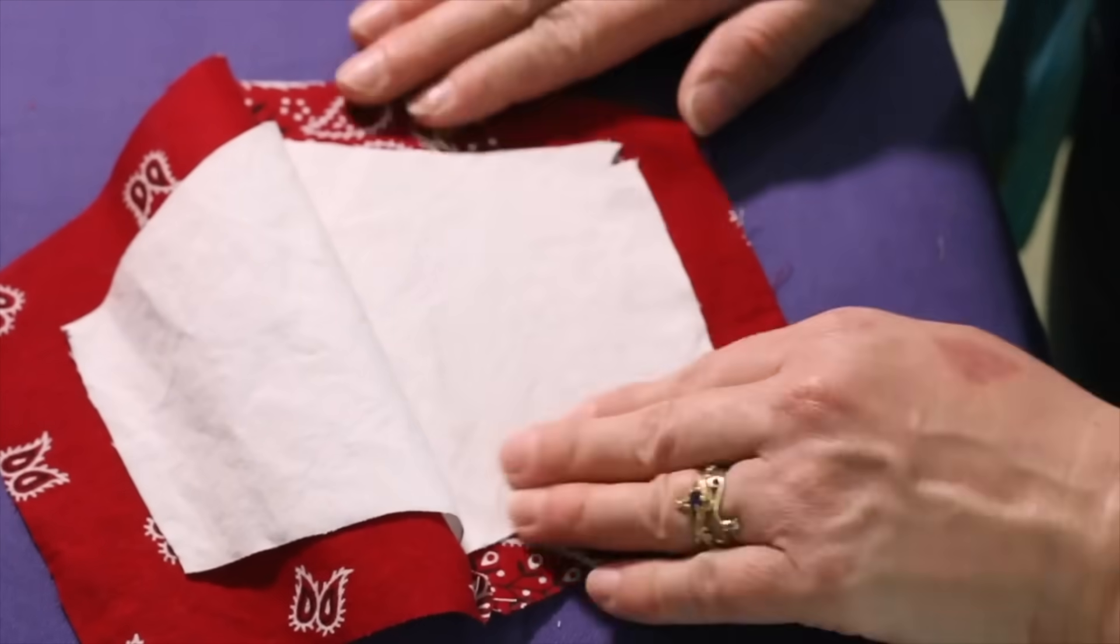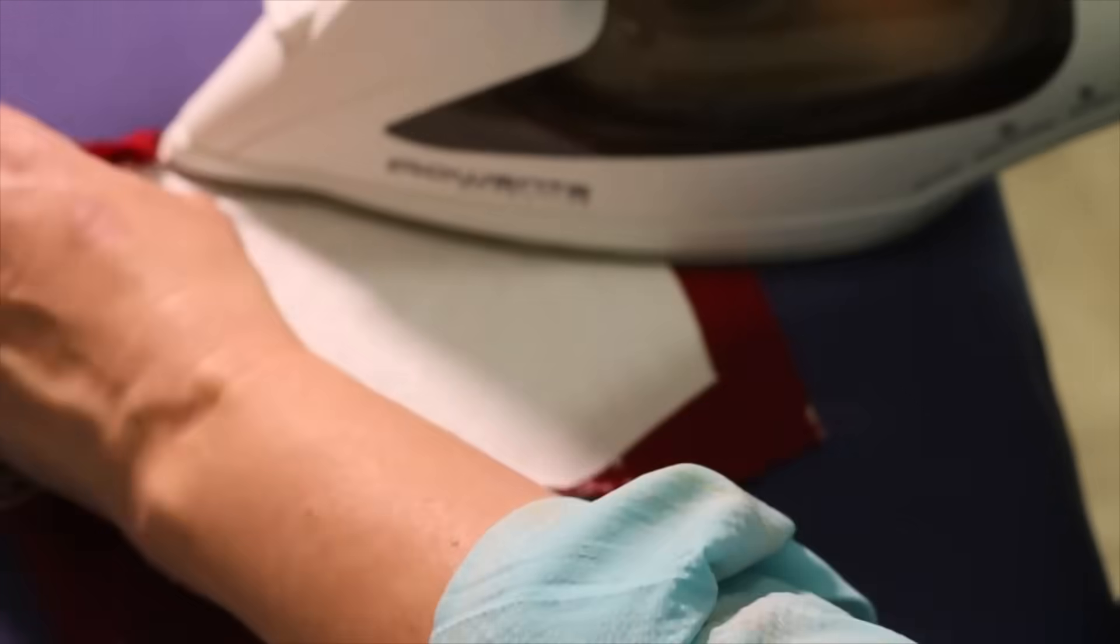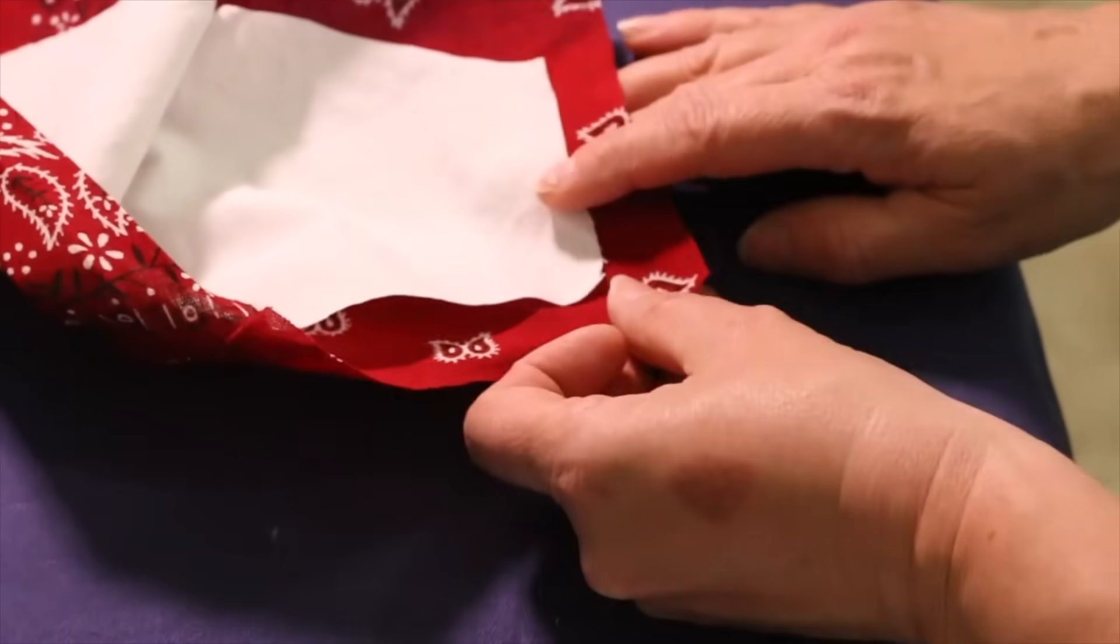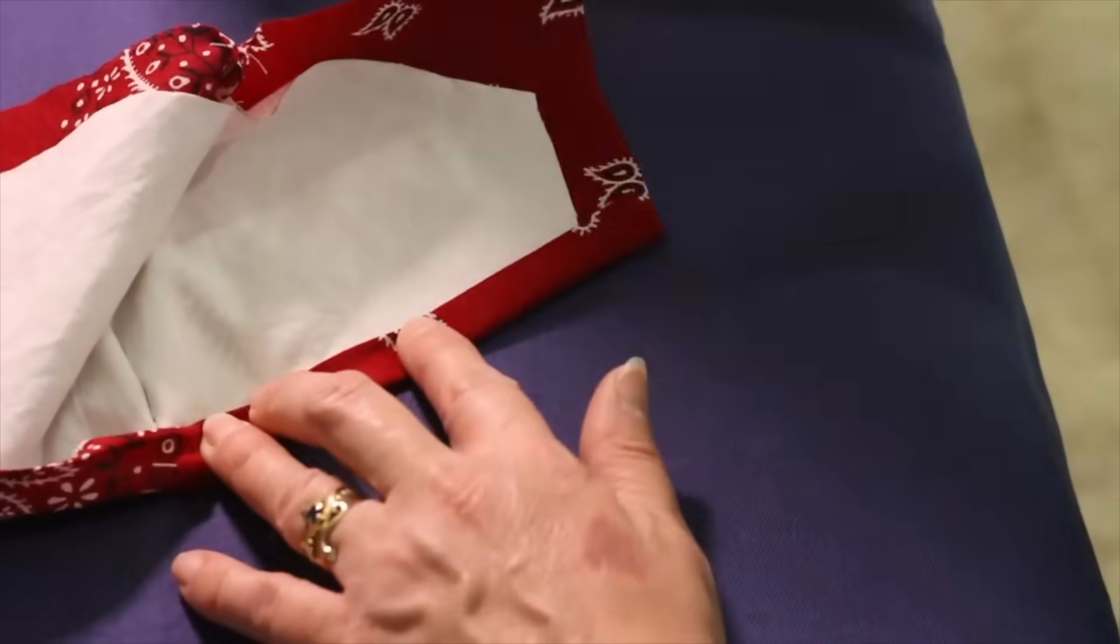Open up the mask to the center. Fold over the outside material once to touch the edge of the liner. Press and then fold over the material a second time, this time over the liner. Continue pressing around the entire mask.